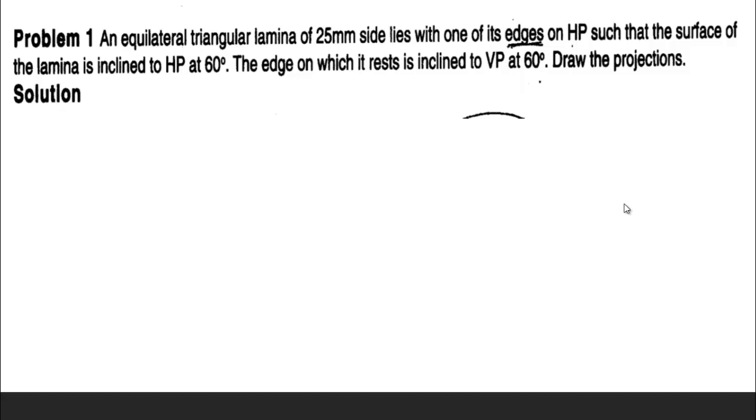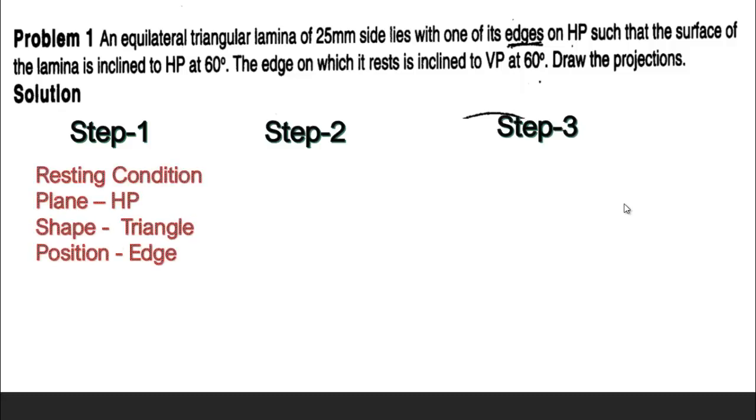So first we will write the data in three steps. In the first step, we need to take the resting condition - the plane is resting on HP, shape of plane is triangle, and position is edge, as they mentioned in the question, resting on HP on one of its edges.